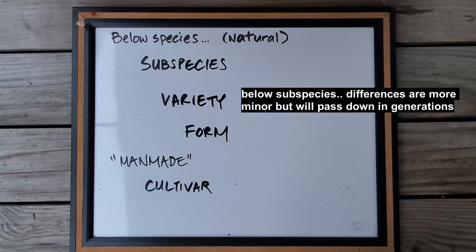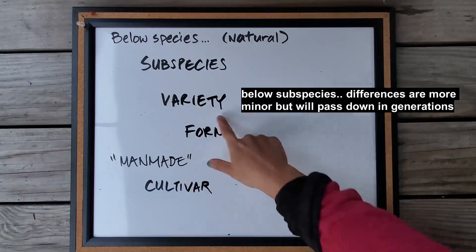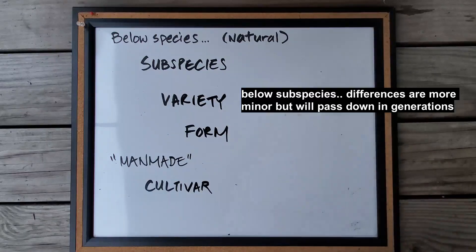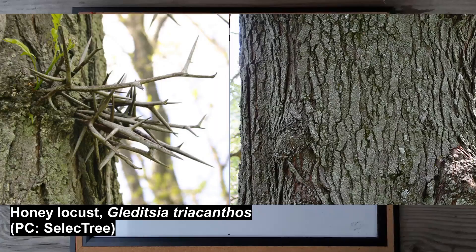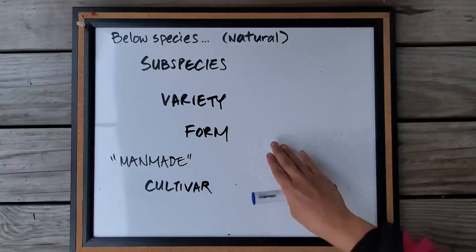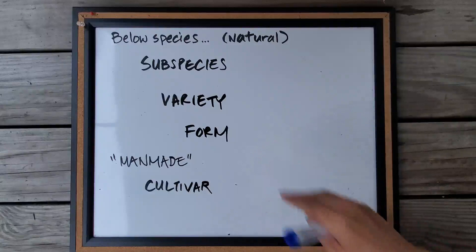The next subcategory below subspecies is variety. These differences tend to be more minor, but they can be passed down to future generations. One example is honey locust — there is a variety called inermis, which is a thornless honey locust. And finally you have forma, or form.